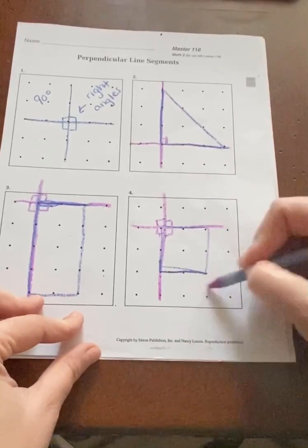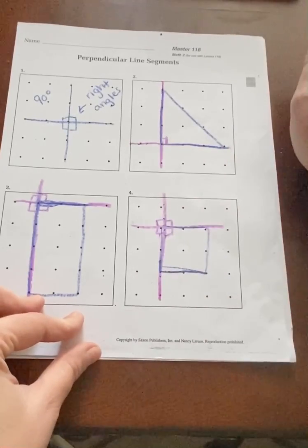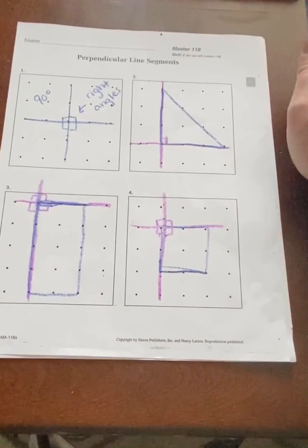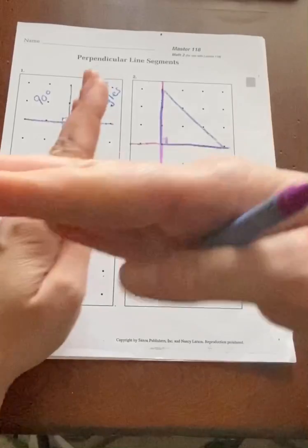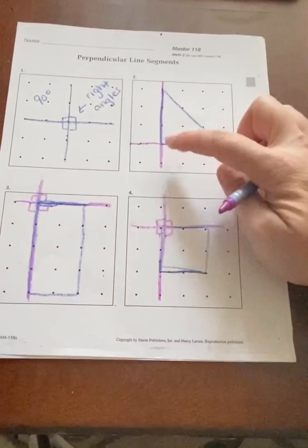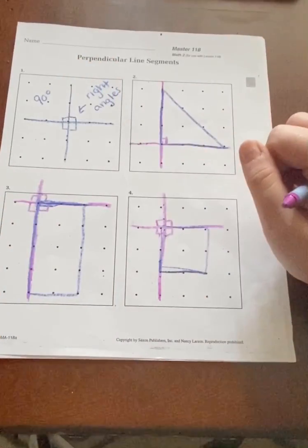Now I could do one here, here, here. There could be four different segments on there. So that is perpendicular line segments where they meet at a 90-degree angle or right angle.